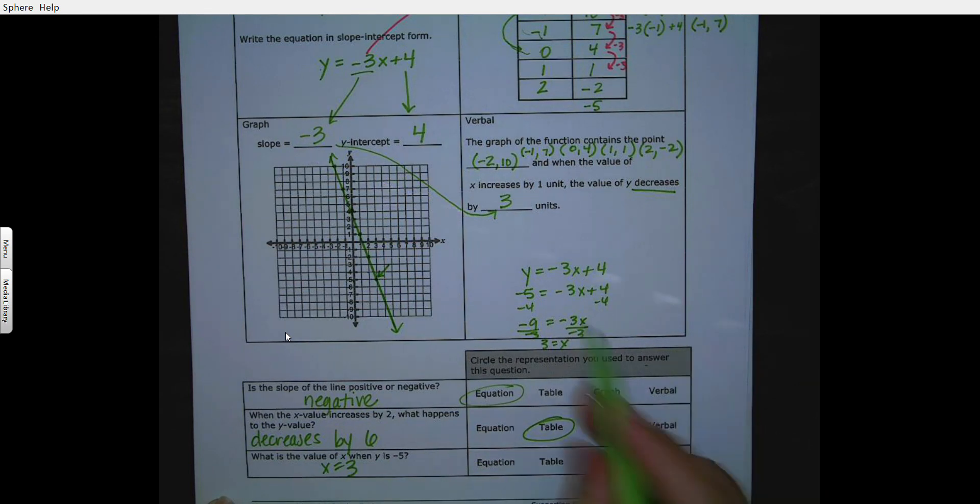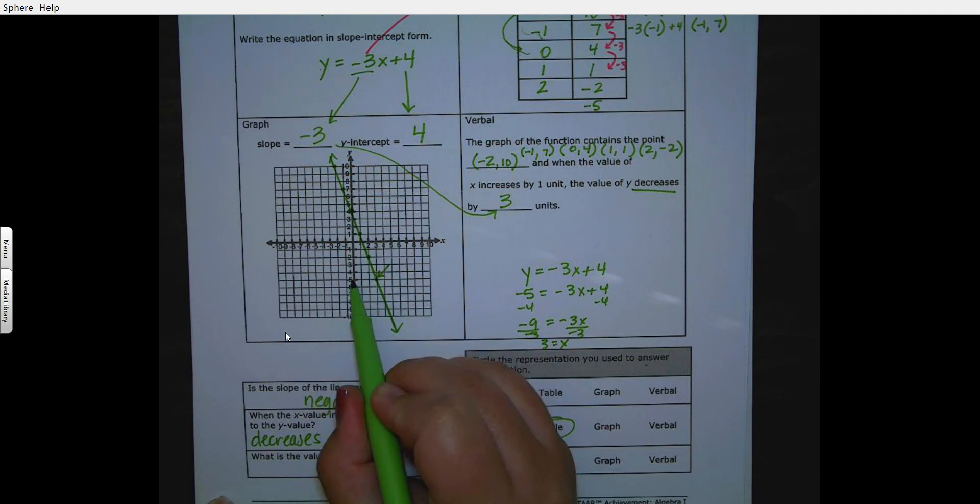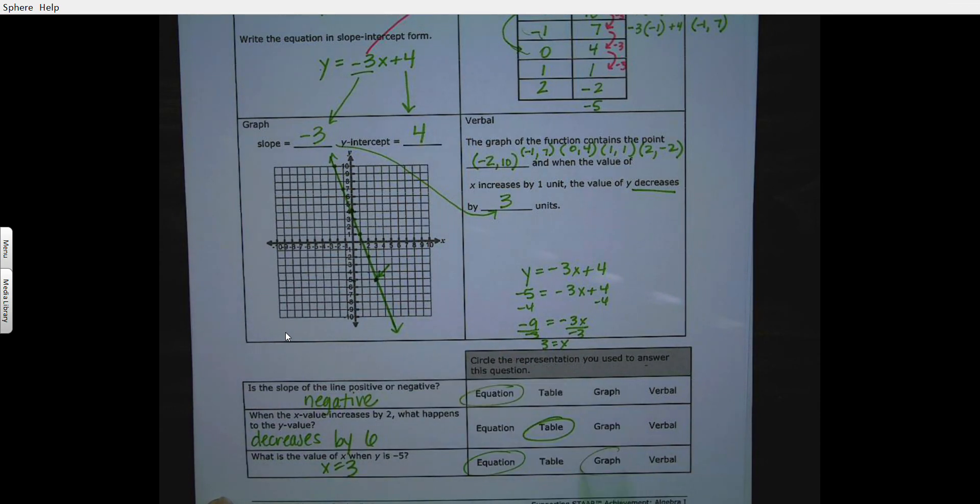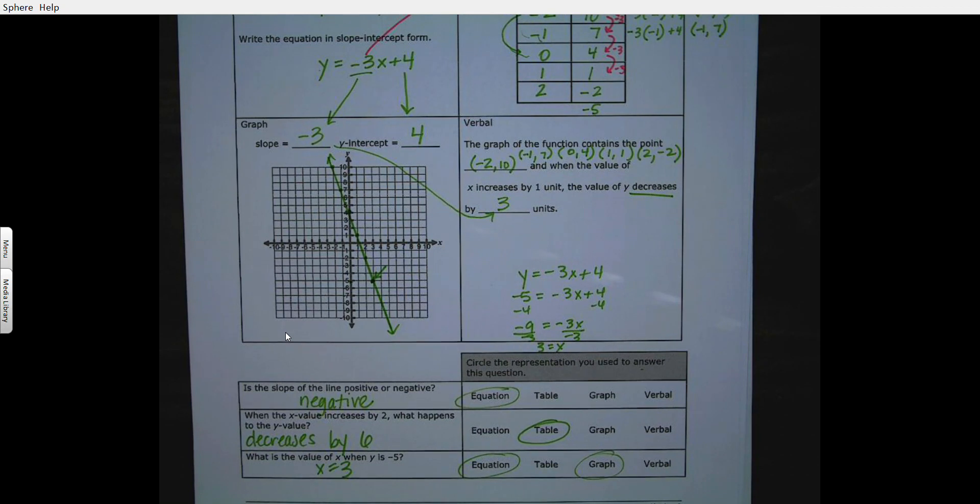So I actually use my equation again, but if I actually did the graph part right, my y is negative 5, that point right there, I could have used my graph. Okay, if you have any questions please reach out.